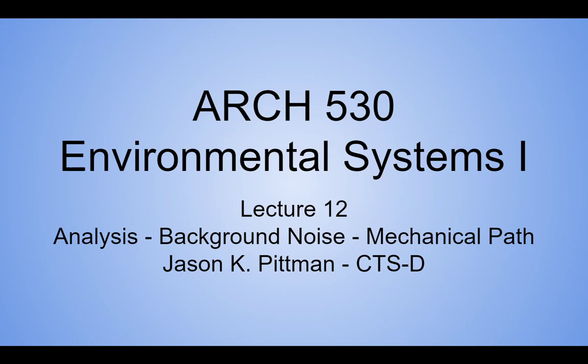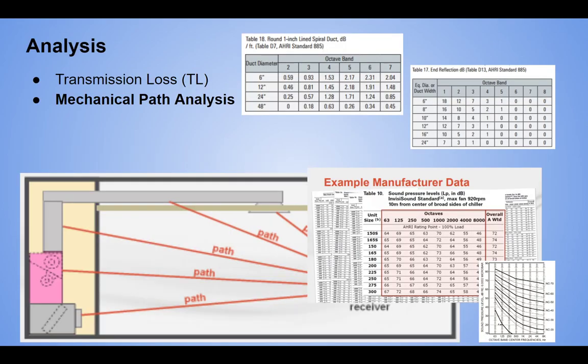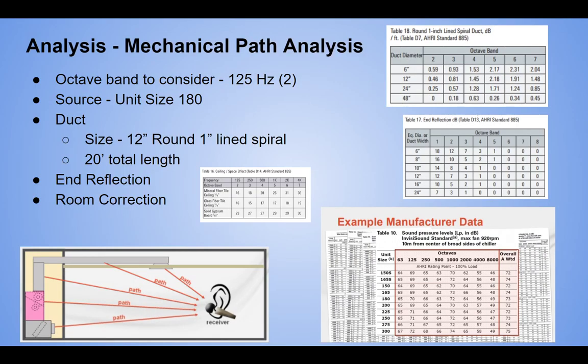What we've done previously is looked at transmission loss. We basically looked at three pathways. We were assuming this was in the space and we weren't worried with the issue of breakout noise. Now we're doing the final one. We're looking at this diffuser, what the level is at this diffuser and what the diffuser noise contributes to NC. For the sake of simplicity and not to do this 15 or 20 times over, we're just going to look at the 125 hertz octave band, octave band number two.